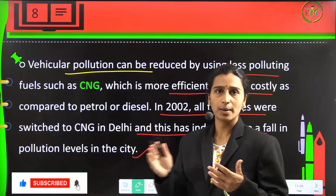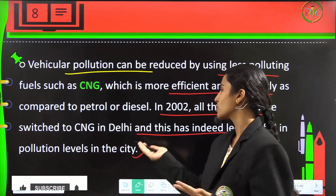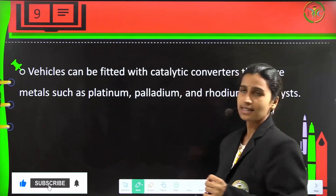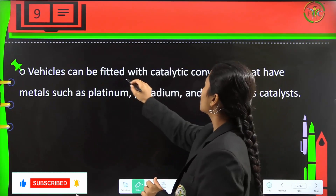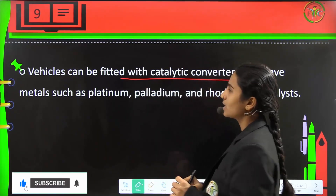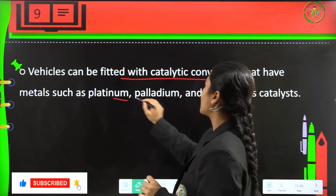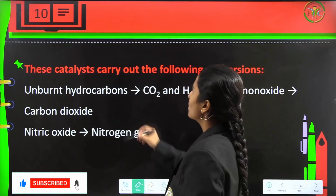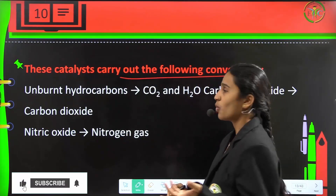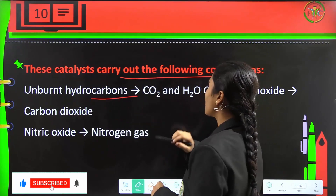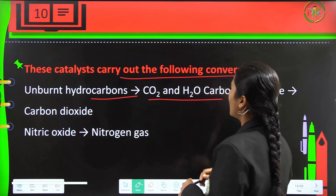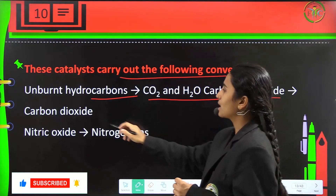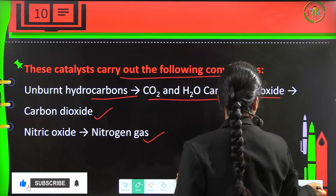The switch of all public transports to CNG led to a greater fall in pollution levels in the entire city. Vehicles can also be fitted with catalytic converters which have metals like platinum, palladium and rhodium as catalysts. These catalysts carry out the following conversions: unburned hydrocarbons burn and become CO2 and H2O, carbon monoxide gives carbon dioxide, and nitric oxide becomes nitrogen gas.